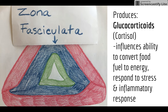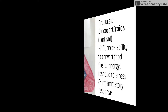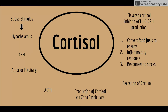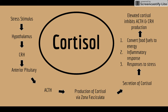Cortisol is also involved in the immune system's inflammatory response. How cortisol usually works: stress is the first stimulus. Your hypothalamus produces CRH and sends it to the anterior pituitary gland, which produces ACTH, which triggers the zona fasciculata of the adrenals to secrete cortisol. Cortisol converts food fuels to energy and helps with inflammatory responses. Elevated cortisol levels will also inhibit ACTH and CRH, stopping the cycle.